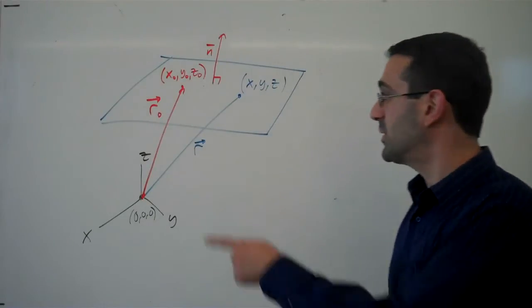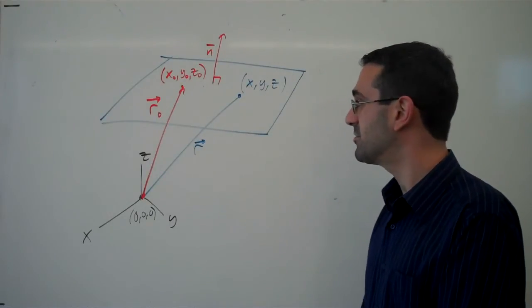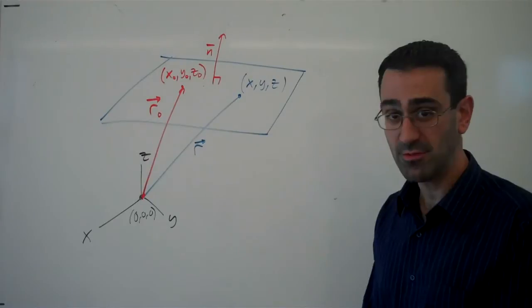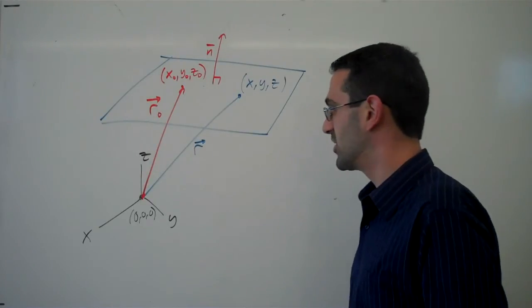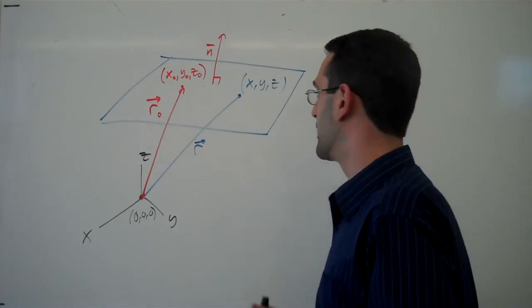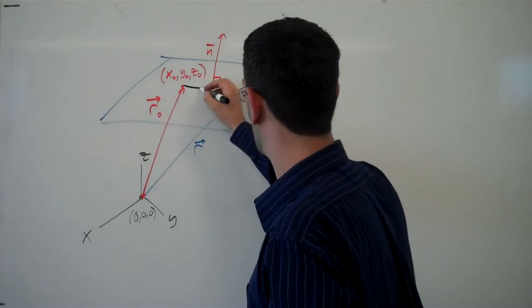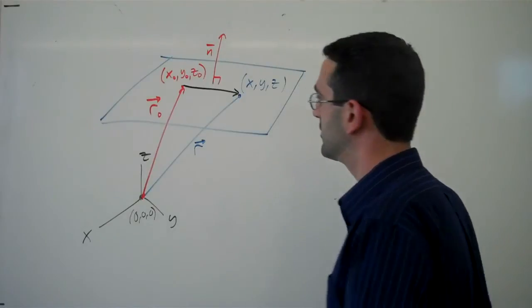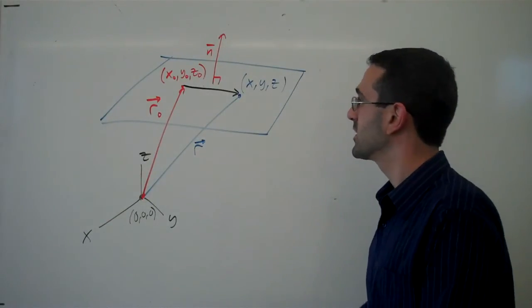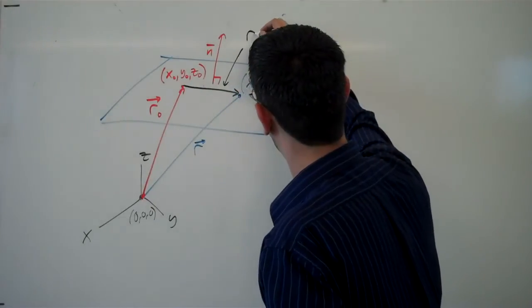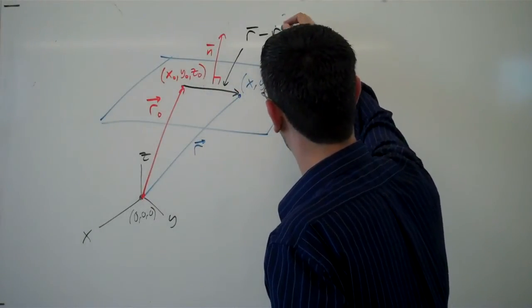Now, between these two vectors, we can find the difference vector. So we can find the vector r minus r_not. And that vector is going to run from r_not to r. So that is the vector r minus r_not.